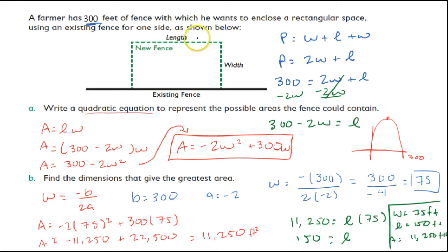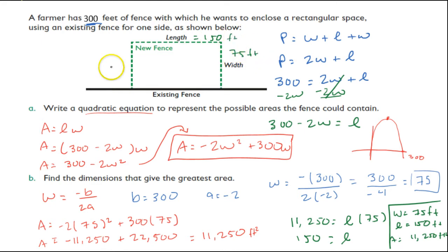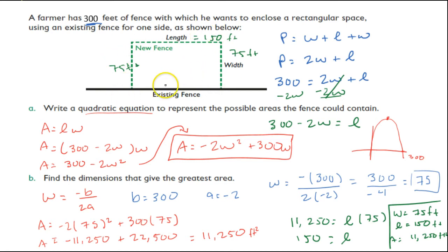This makes sense: if my length is 150 feet and each width side is 75 feet, then 150 + 75 + 75 gives a total of 300 feet for my perimeter, which checks out.